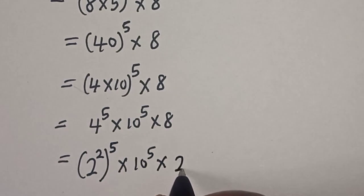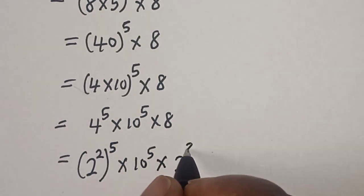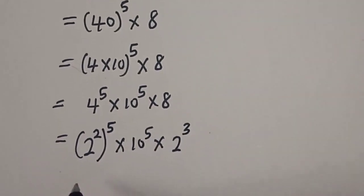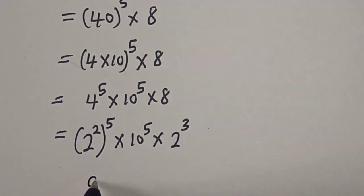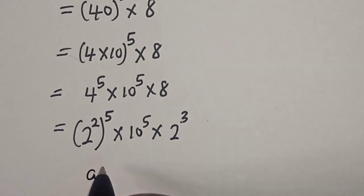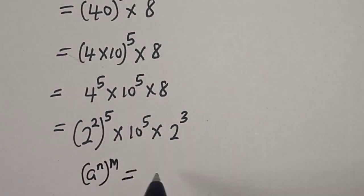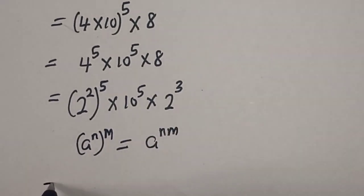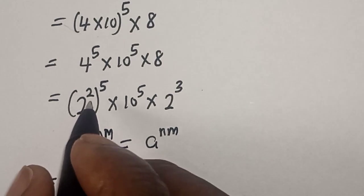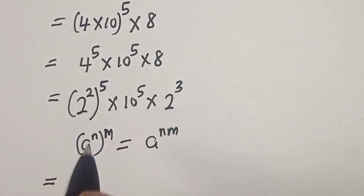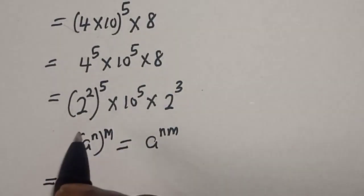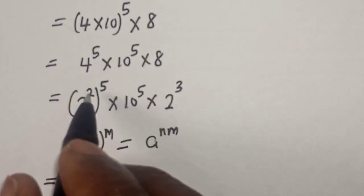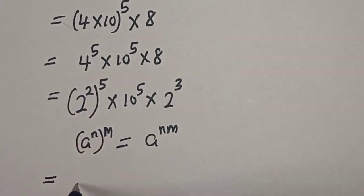Now, 4 raised to power 5 can be written as 2 raised to power 2, to the power of 5, multiplied by 10 to the power of 5, and 8 can be written as 2 raised to power 3. Remember the rule: a raised to power n, to the power of m, is equal to a raised to power n times m. So 2 raised to power 2 times 5 gives us 2 raised to power 10.